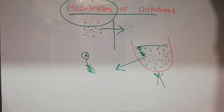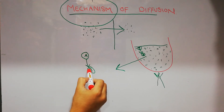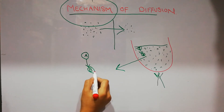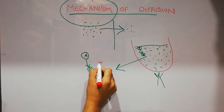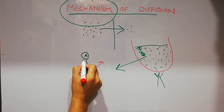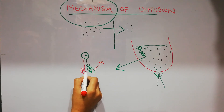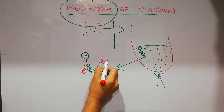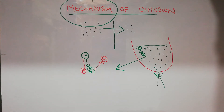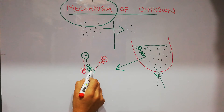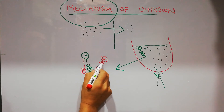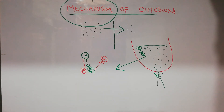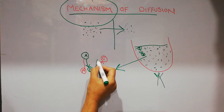Molecule A comes in contact with another molecule — we label it as B. The energy of molecule A will get transferred to molecule B, the speed of B will increase, and A will halt its movement. Then molecule B comes in contact with another molecule C, and the speed of B gets transferred to molecule C, while B's movement gets stopped.